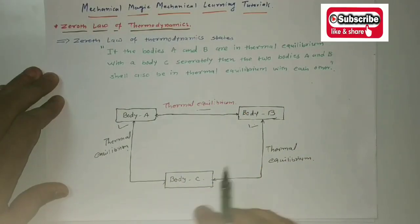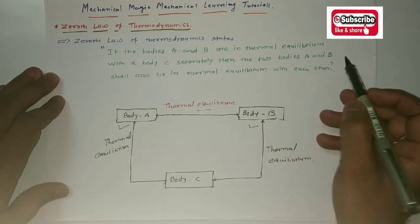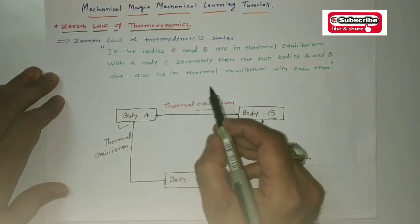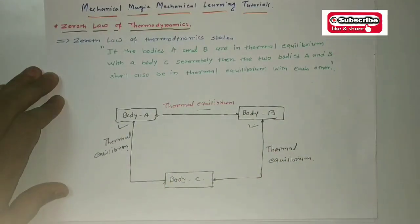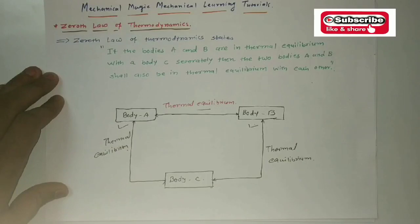If bodies A and B are in thermal equilibrium with body C from both ends separately, then the bodies A and B shall also be in thermal equilibrium with each other. So all three bodies will be in equilibrium conditions. That is nothing but the Zeroth Law of Thermodynamics.